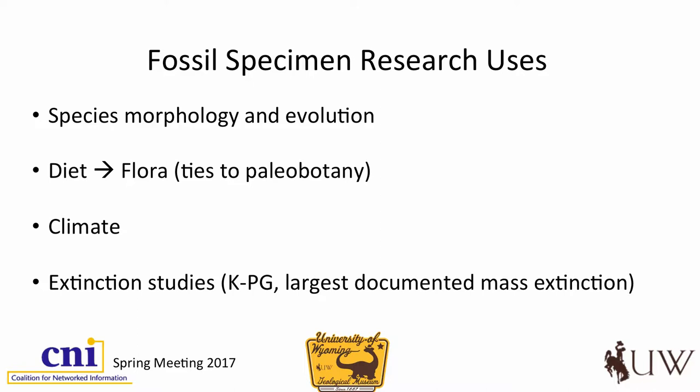Research uses — obviously you can do lots of species morphology and evolutionary studies with this. When you're looking at these very small teeth, they can get information about what these animals ate, how old they were, and that gives them information about the kind of plants that grew and the kind of climate that it was. So there are all sorts of really interesting research uses. Extinction studies and climate are other things you can look at. The KPG event is actually the largest documented mass extinction on record, and this is all basically housed in our collection so we can study it at Wyoming.